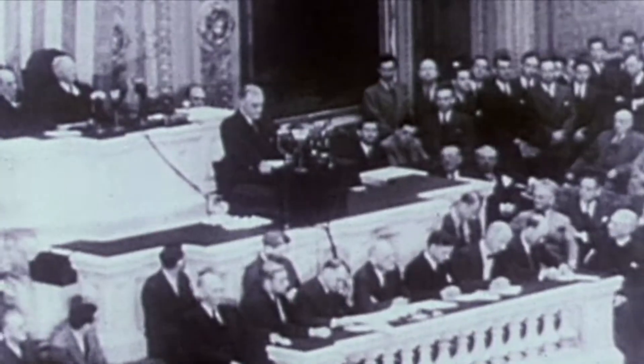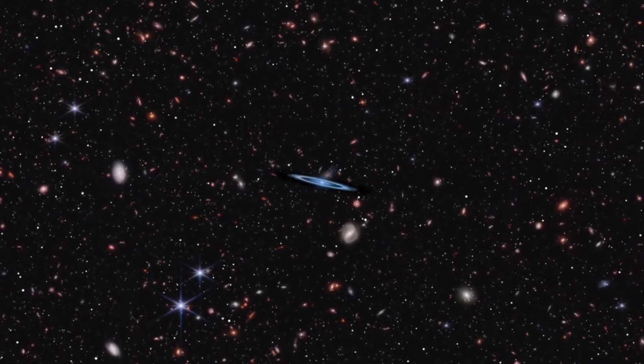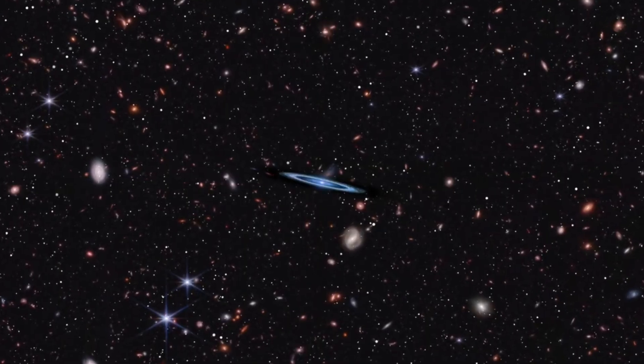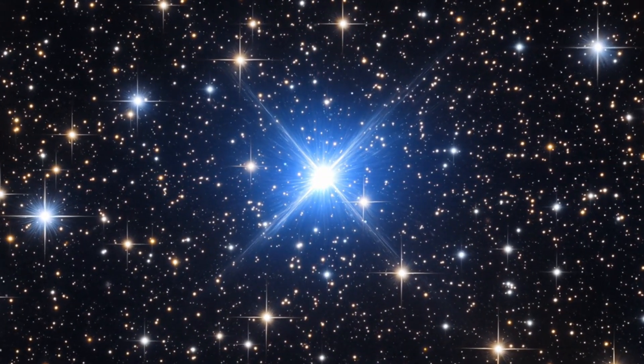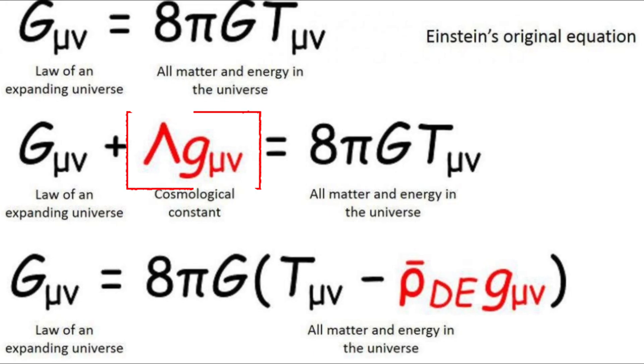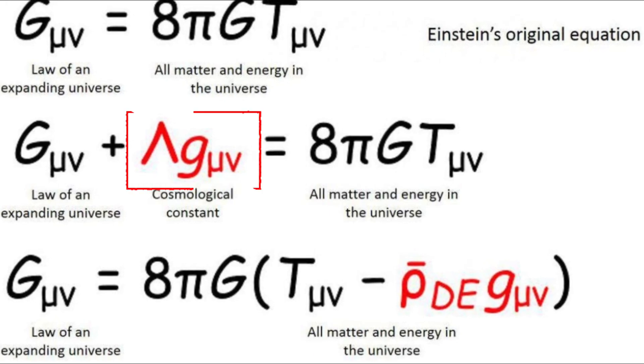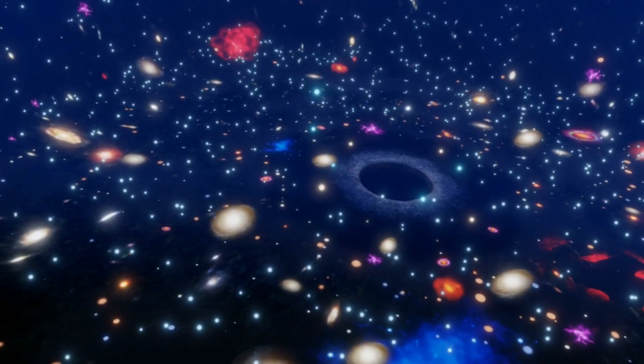This marked a significant turning point in the field of cosmology. Yet, it was still widely believed that the universe was static. Interestingly, this static view was reinforced by Albert Einstein, who introduced the concept of a cosmological constant into his equations of general relativity to keep the universe in a steady state.